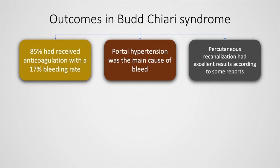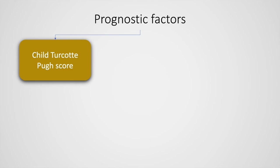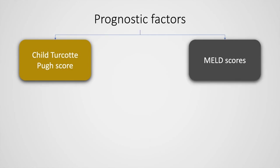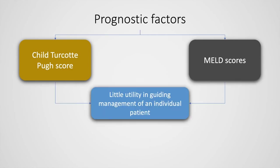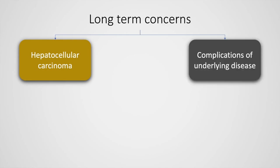These percentages are likely to change but overall represent the outcome in Budd-Chiari syndrome. Prognostication includes the Child-Turcotte-Pugh score and the MELD scores, although they have little utility in guiding management of the individual patient. Long-term concerns in patients with Budd-Chiari syndrome include hepatocellular carcinoma and complications of the underlying disease.